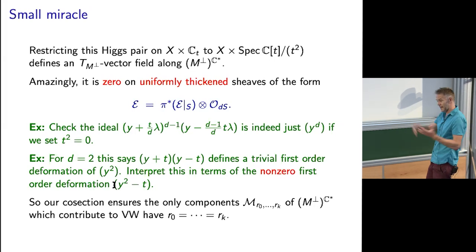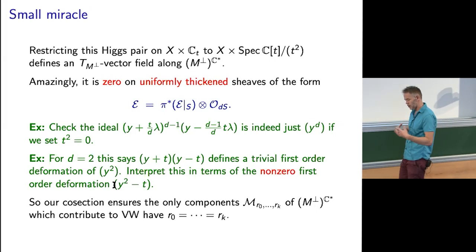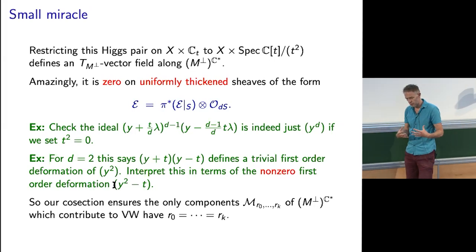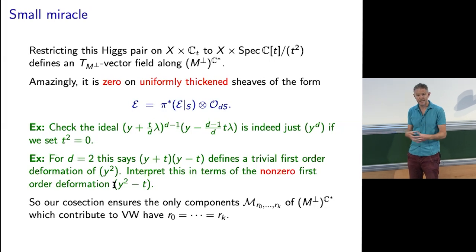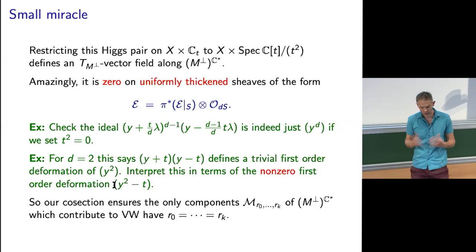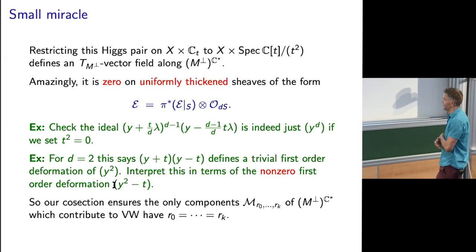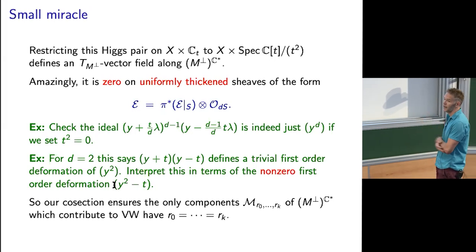What you find is: this vector field on the components we've already computed — these nested Hilbert schemes — vanishes. It doesn't tell us anything. On all the other components, it's non-zero and says that the invariants vanish.